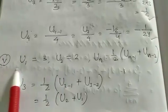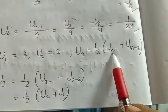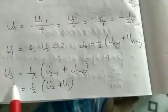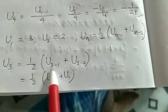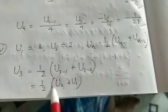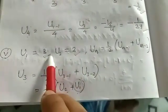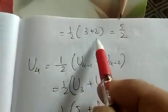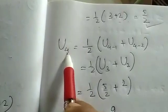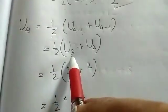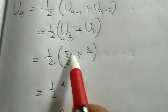Question number 5: U(1) and U(2) are given; we need to find U(3) and U(4). For U(3), putting n equals 3: U(3) = half of U(3 minus 1) + U(3 minus 2) = half of U(2) + U(1). U(2) is 2 and U(1) is 3, so U(3) = half of (2 plus 3) = 5/2. For U(4), putting n equals 4: U(4) = half of U(3) + U(2) = half of (5/2 plus 2) = half of (9/2)... so 9/4. The rest you can try yourself.